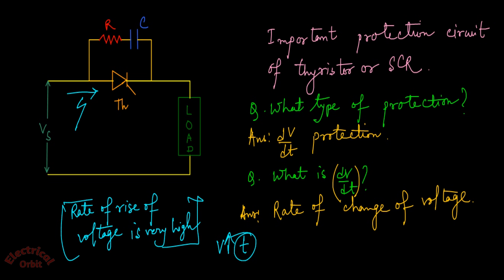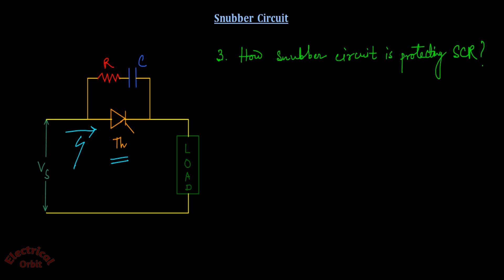Then the snubber circuit can protect the thyristor or SCR. Now your question will be: how is this snubber circuit protecting the SCR? It's all about the capacitor connected parallel to the thyristor.